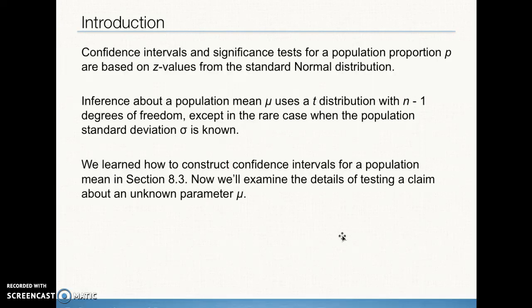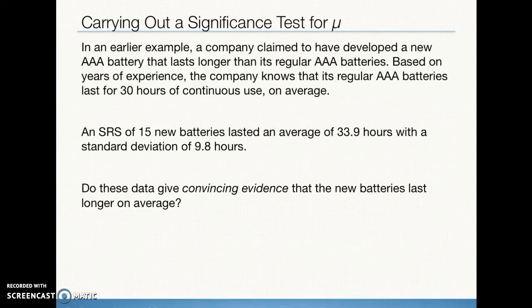We learned how to construct a confidence interval for a population mean back in Section 8.3. Now in Section 9.3, we'll see how to test a claim for a population mean. You may remember an example about AAA batteries. The company claims the new AAA battery lasts longer than traditional AAA batteries. Based on years of experience, the previous AAA battery design lasted 30 hours of continuous use — a long-term average. We take a simple random sample of size 15 of the new batteries and found a mean life of 33.9 hours and a standard deviation of 9.8 hours. The question is: do these data give convincing evidence that the new batteries last longer on average than the previous design?